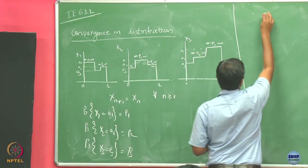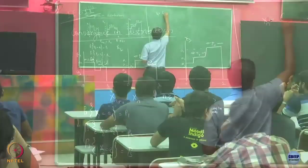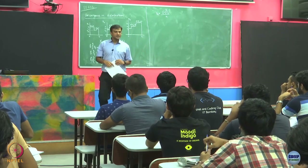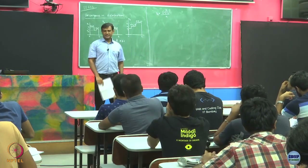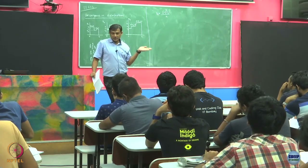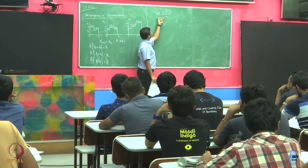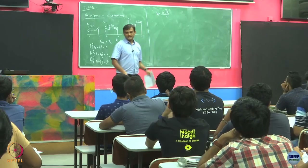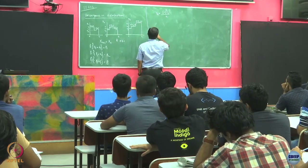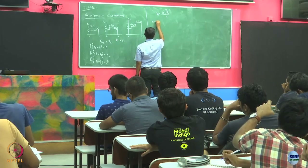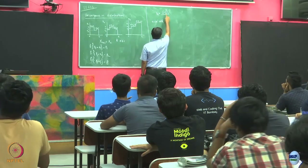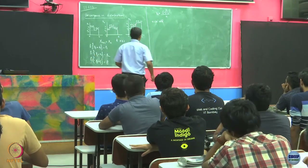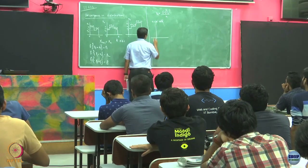Now let us look at another sequence of random variables. u is a uniform random variable. I am going to look at a sequence of scaled uniform random variables: u scaled by (-1)^n / n. Let us try to understand how the distribution of this looks like. Let us take n to be odd.